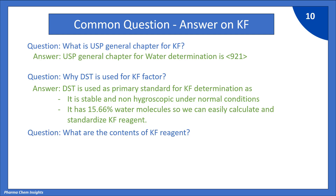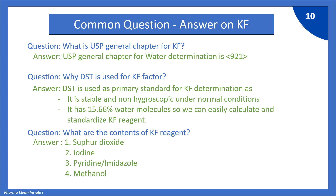Next question: what are the contents of KF reagent? The contents of KF reagent are sulfur dioxide, iodine, pyridine or imidazole, and methanol. Previously, pyridine was used for preparation of KF reagent, but later it was found to be carcinogenic and toxic to humans. So, pyridine is replaced by imidazole as a base.